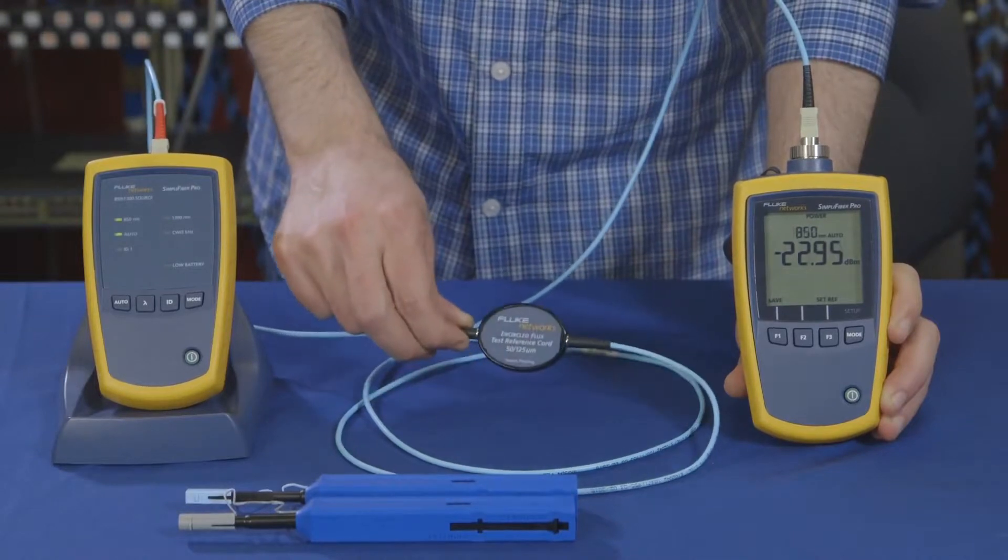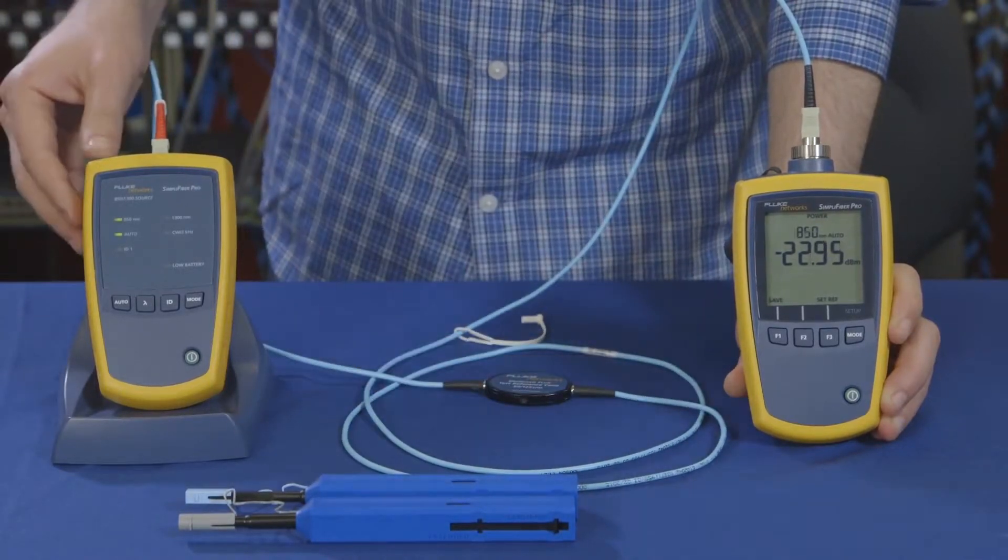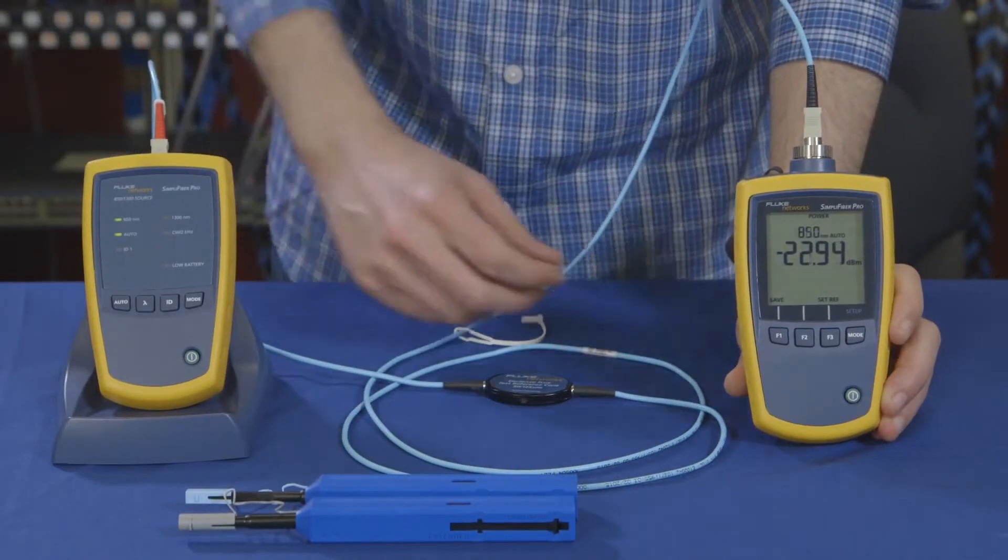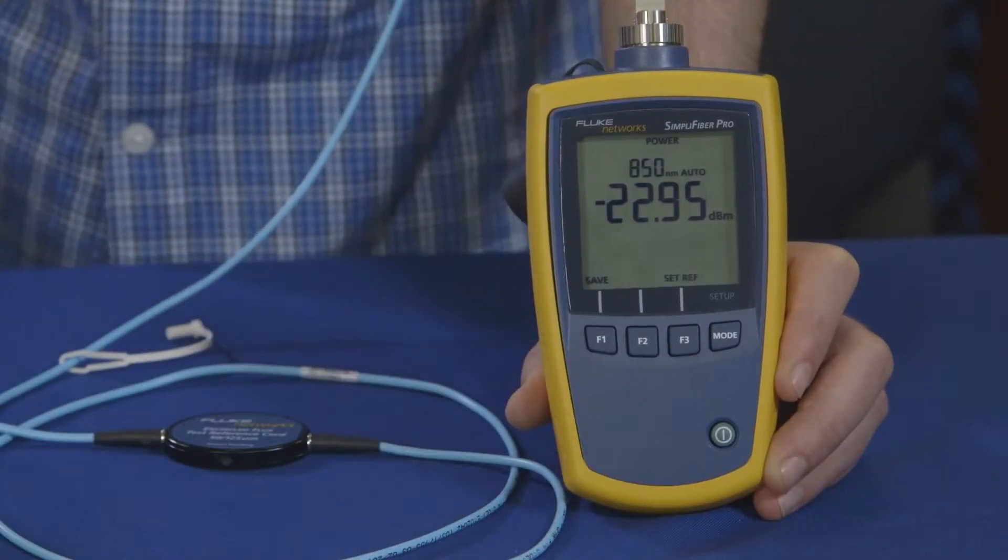Using our encircled flux TRC, we've attached the light source to the power meter. We set reference using the one jumper method.